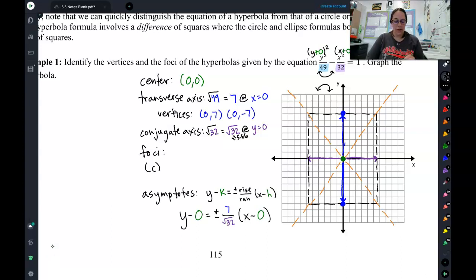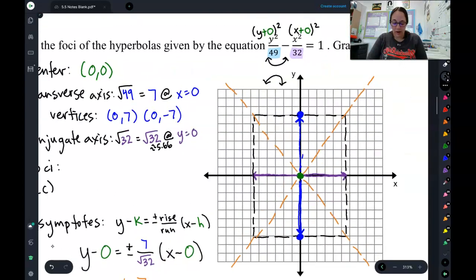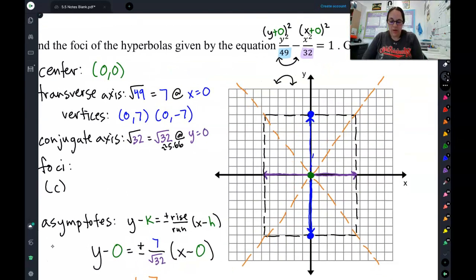So, now that I have that done, let's simplify this down. So I have y minus 0, don't need, equals plus or minus 7 over square root of 32. x minus 0 is just x. And that is the equation for both of my asymptotes. Now that I've got all of this in here, I can actually come in here and graph my hyperbolas.